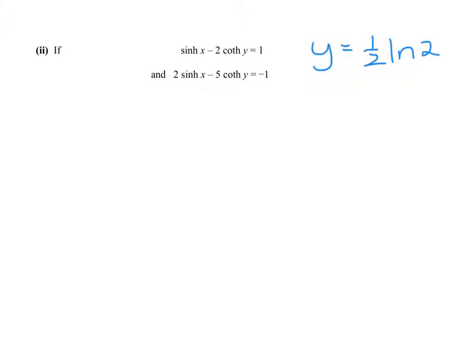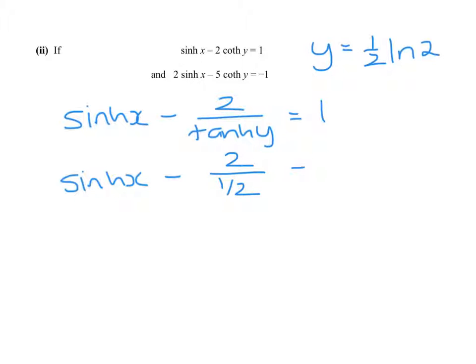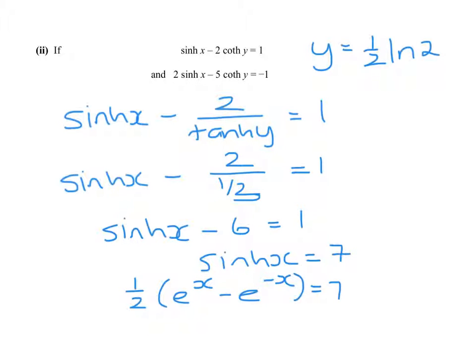If I go back to my first formula, I had that sinh of x minus 2 over tanh y equals 1. And we know that tanh of y is 1 third. That tells me that sinh of x equals 7. So 1 half e to the x minus e to the minus x equals 7.